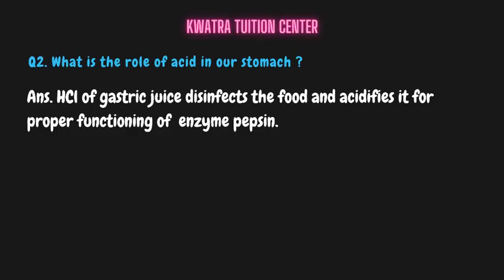Second question: what is the role of acid in our stomach? We know that HCl is present as an acid in our stomach. First, it disinfects our food — you must write 'disinfect the food' or 'it kills microorganisms.' Second, it acidifies the stomach so that the enzyme pepsin can function properly. If the stomach is not acidified, pepsin will have no role. Remember these two roles of HCl.